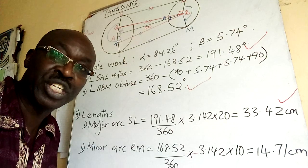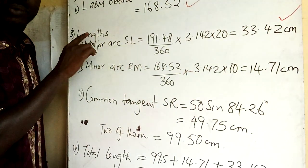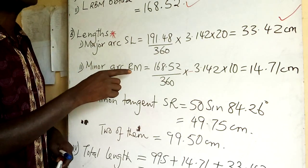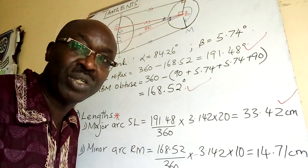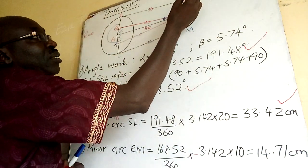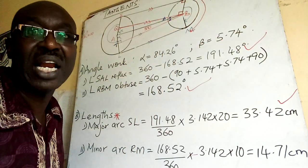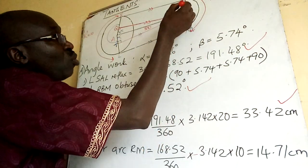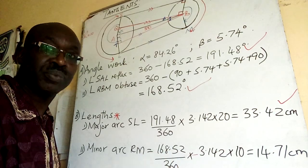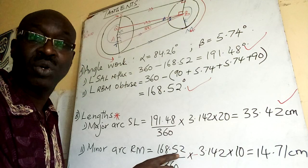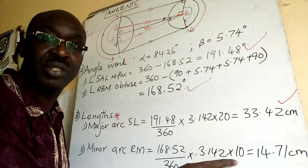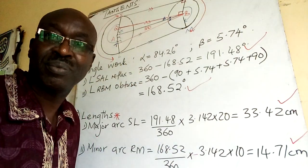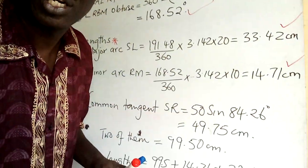Now dealing with minor arc RM — from here all the way up to here. This was major; now I deal with minor. I need this angle which we found to be 168.52°. So minor arc RM = (168.52 / 360) × π × diameter. The diameter here is 10 because the radius is 5. That gives the minor arc length.